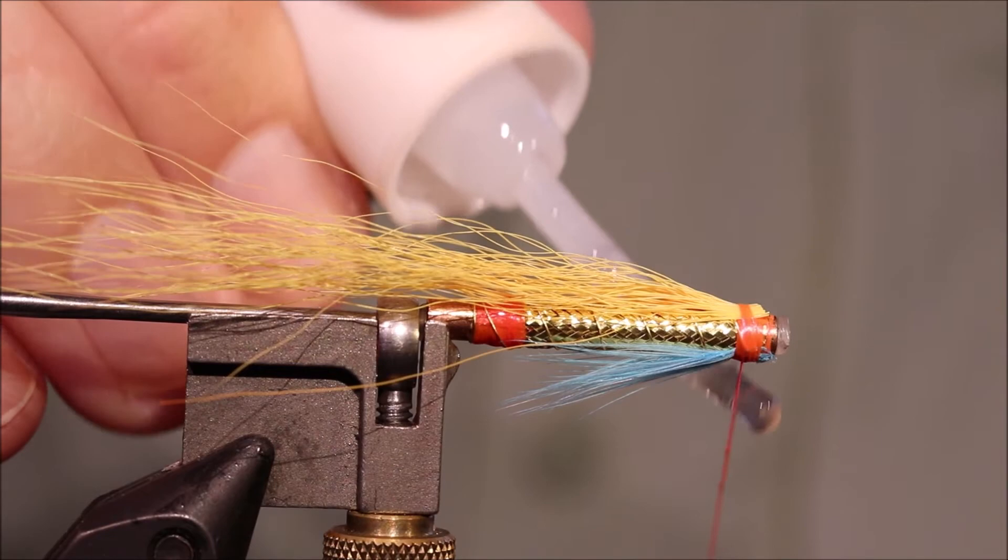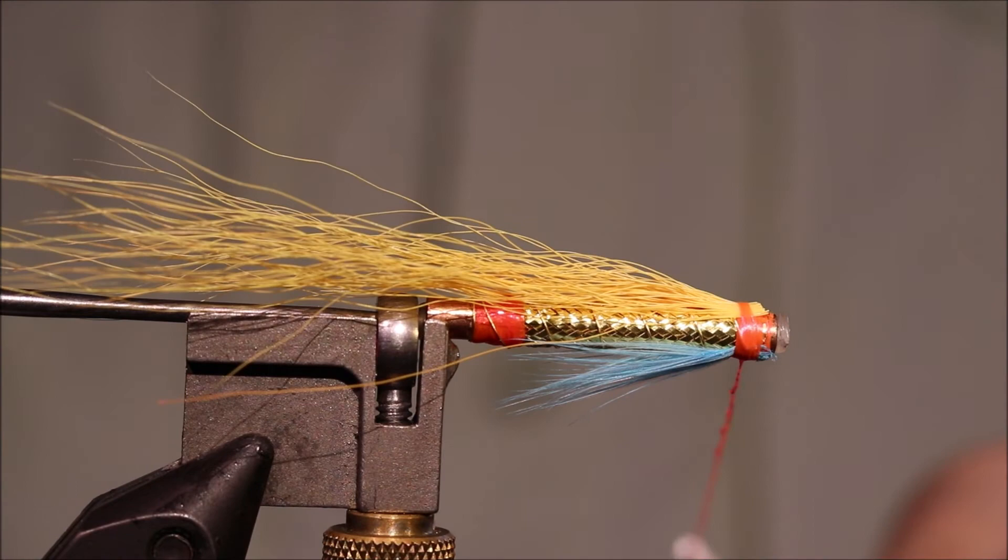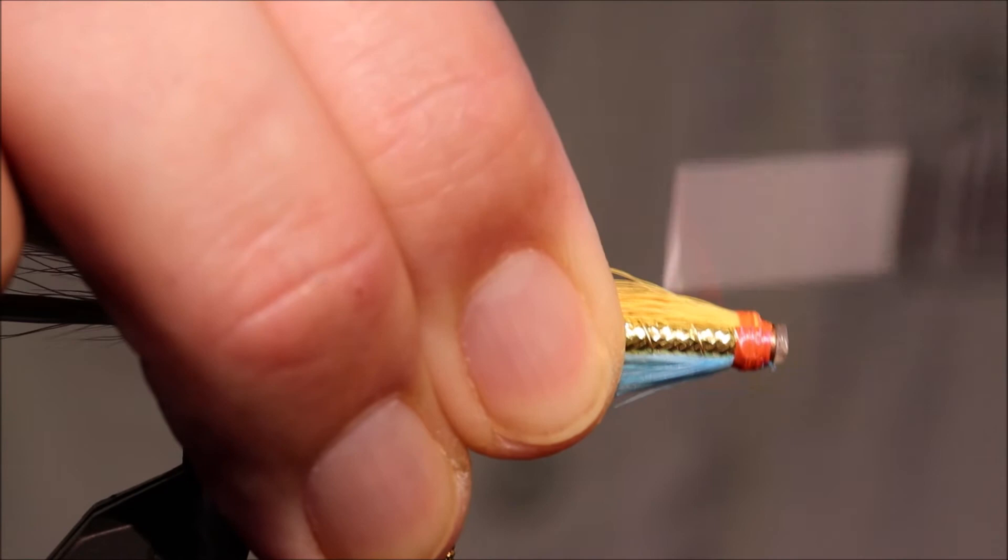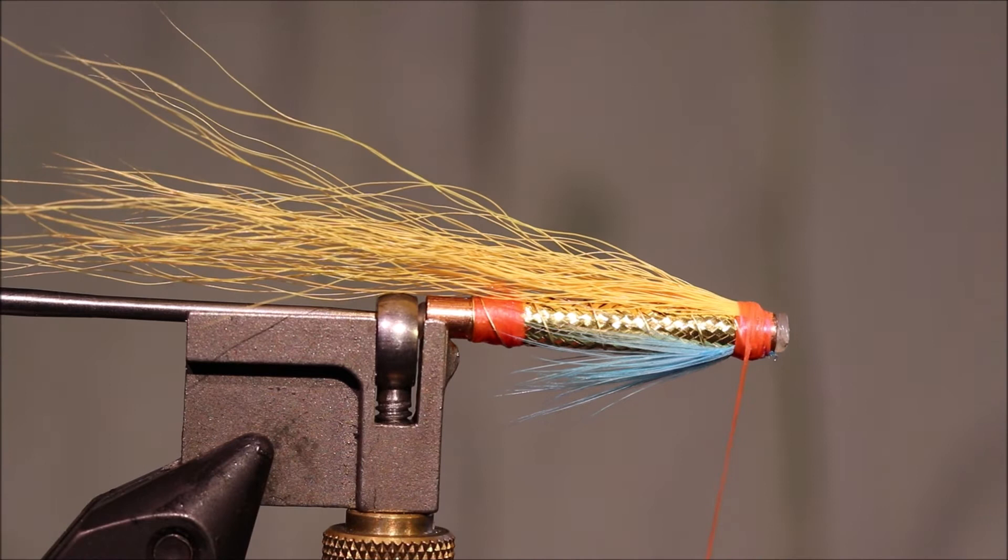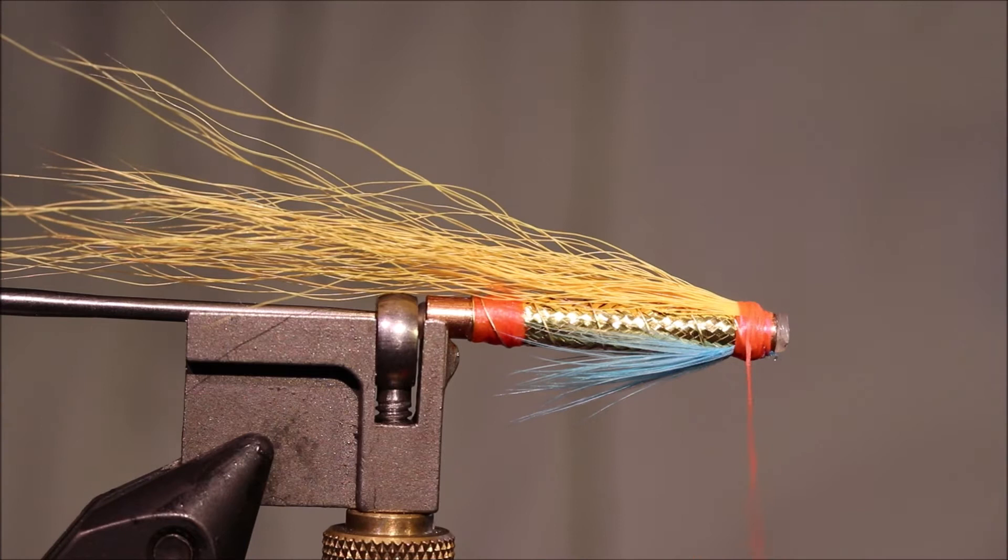Now for a bit of security and durability, what I like to do here is put a wee bit of glue on the thread and come in and wind that into those butts. Tidy up that head a wee bit. I mean they wouldn't pull out, but that's a bit of extra security.